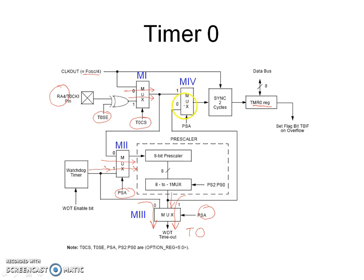Input number 0 of M4 is connected to the output of the prescalar block and input number 1 of M4 is connected to the output of M1. The control input of M4 is PSA. When PSA is 0, the output of M4 is the output of the prescalar block. When PSA is 1, the output of M4 is the output of M1. The output of M4 passes through the synchronization block and then it increments the count in the TMR0 register.